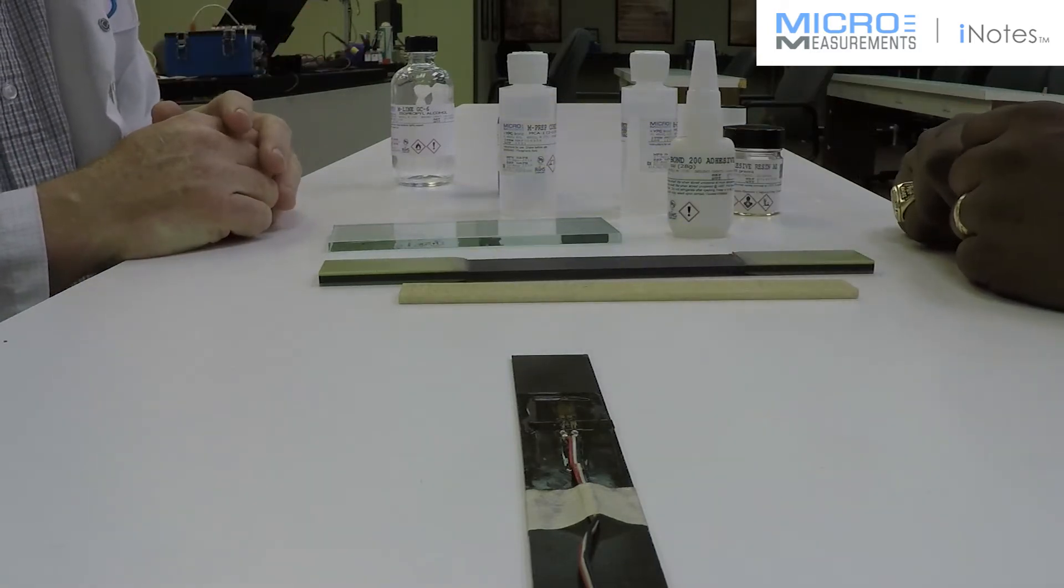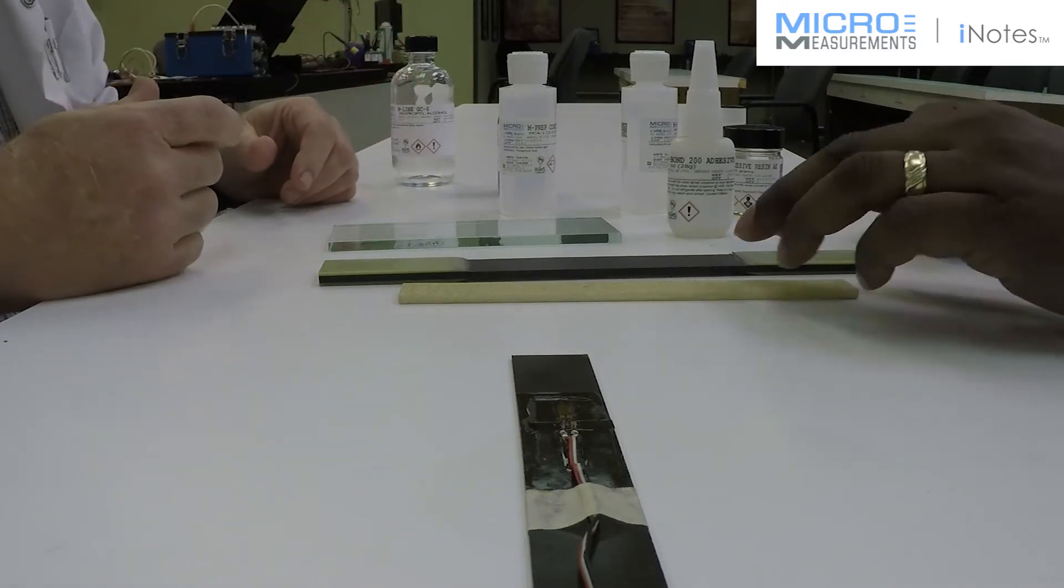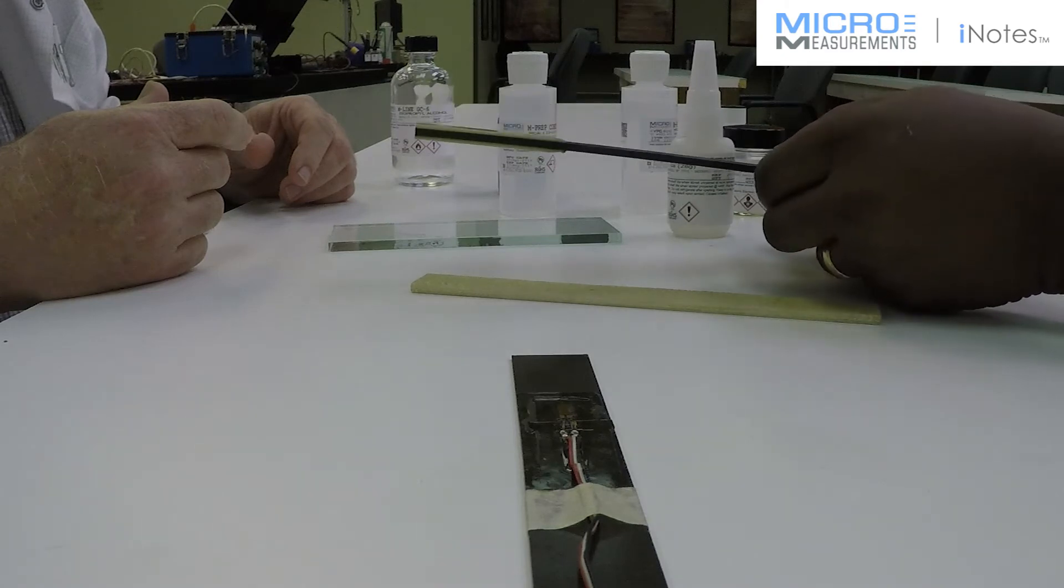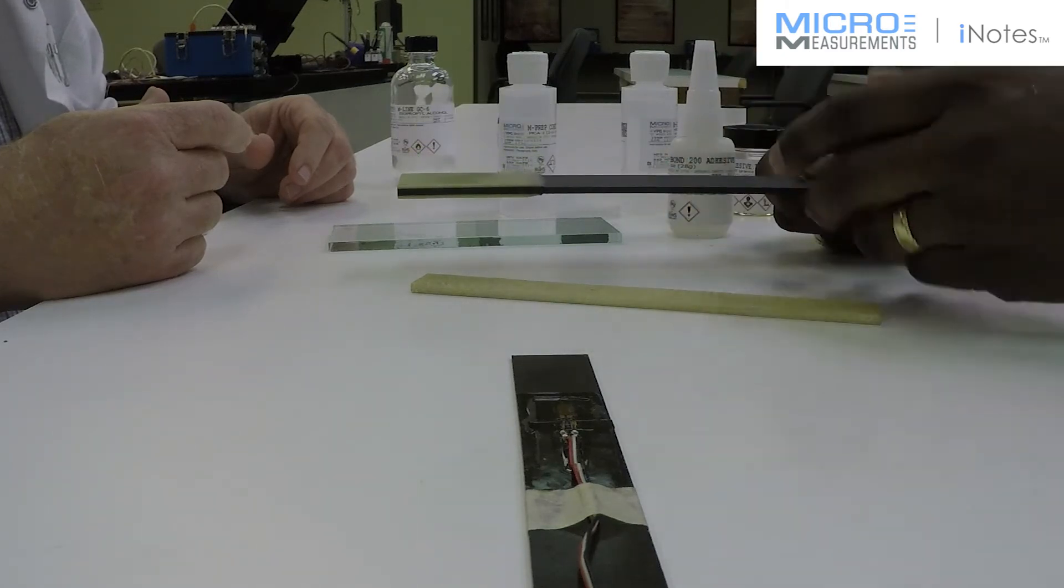What about the resistance of the strain gauge? 120, 350, 1000 ohm? What would be best? Since composite materials are generally poor heat sinks, you would generally go with a higher resistance gauge like a 350 ohm or greater in this application.